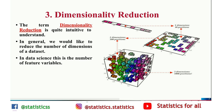The third main topic is dimensionality reduction. If we have a dataset, we would like to reduce the number of dimensions it has in data science — that is, the number of features or variables. You can see different dimensions in the figure: three dimensions, two dimensions, and one dimension.